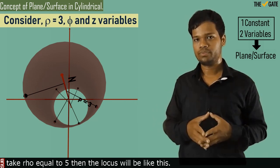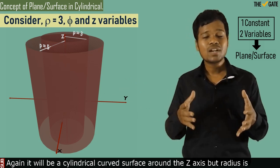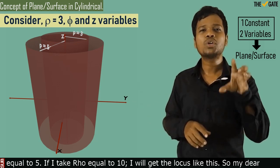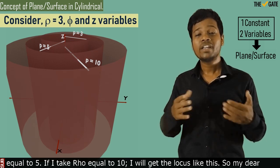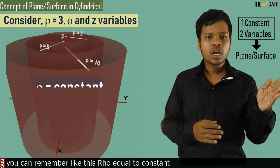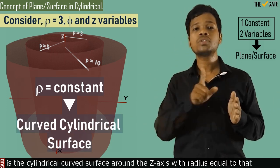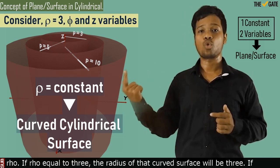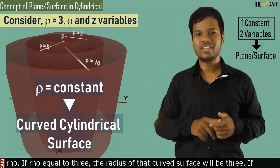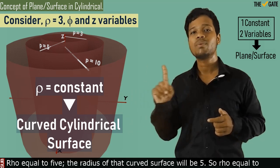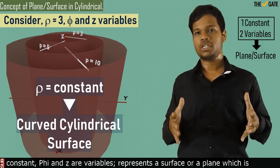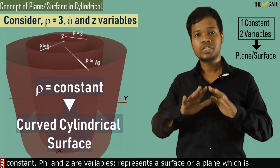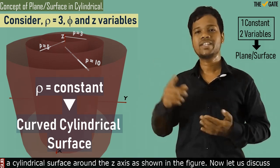If rho equal to 5, the locus will be a cylindrical curved surface around the z-axis but with radius equal to 5. If rho equal to 10, the locus will be a larger cylinder. So rho equal to constant is a cylindrical curved surface around the z-axis with radius equal to that rho value. Rho equal to constant, with phi and z as variables, represents a cylindrical surface around the z-axis as shown in the figure.